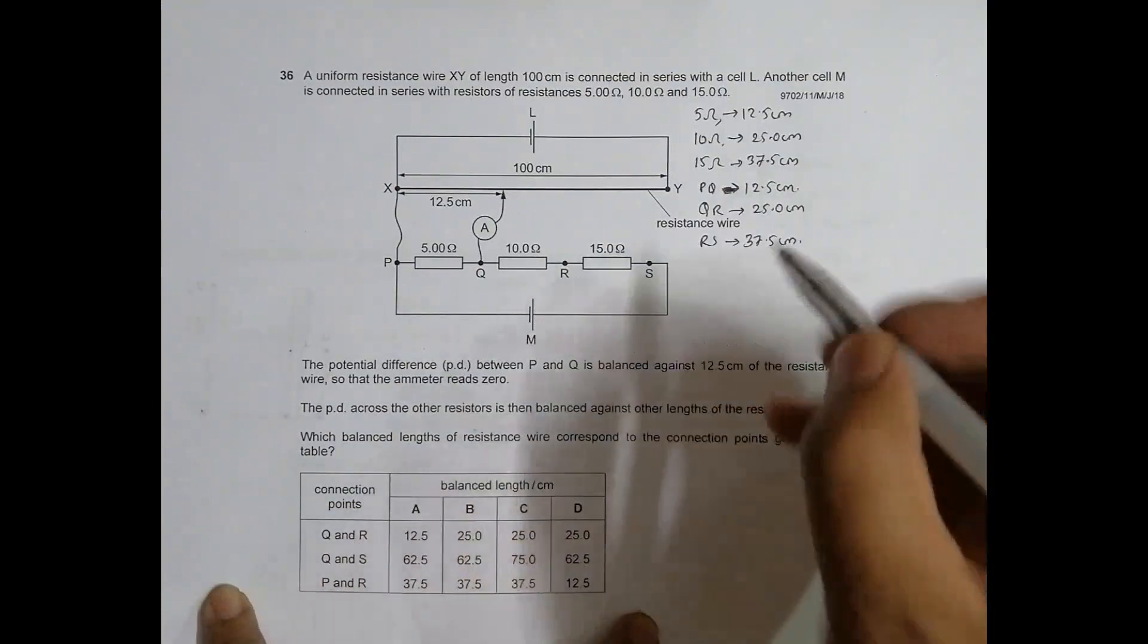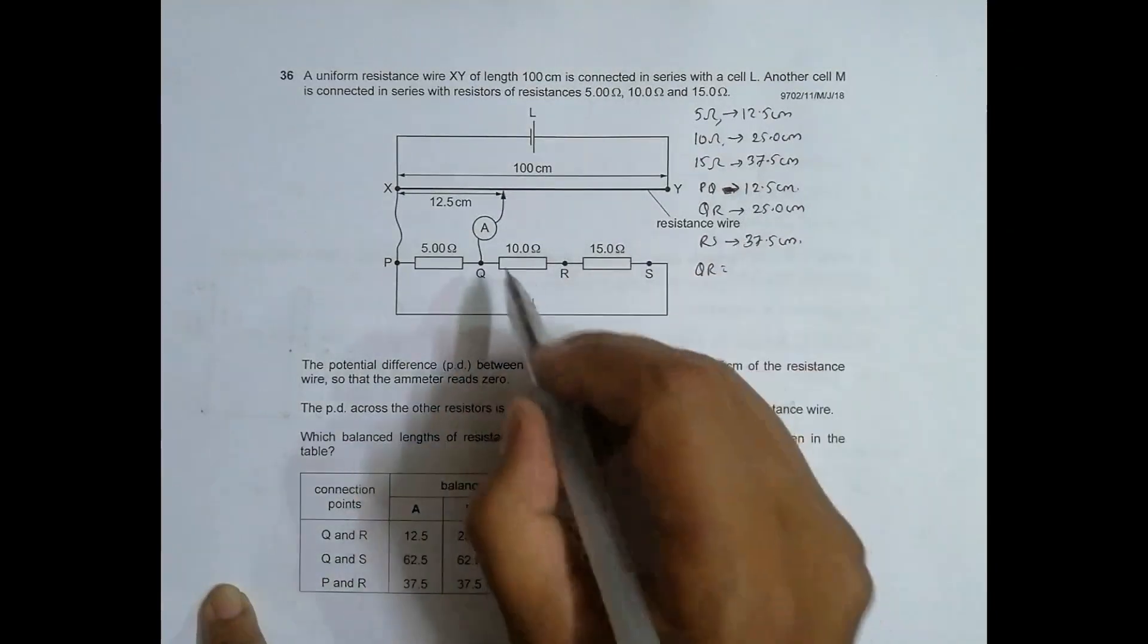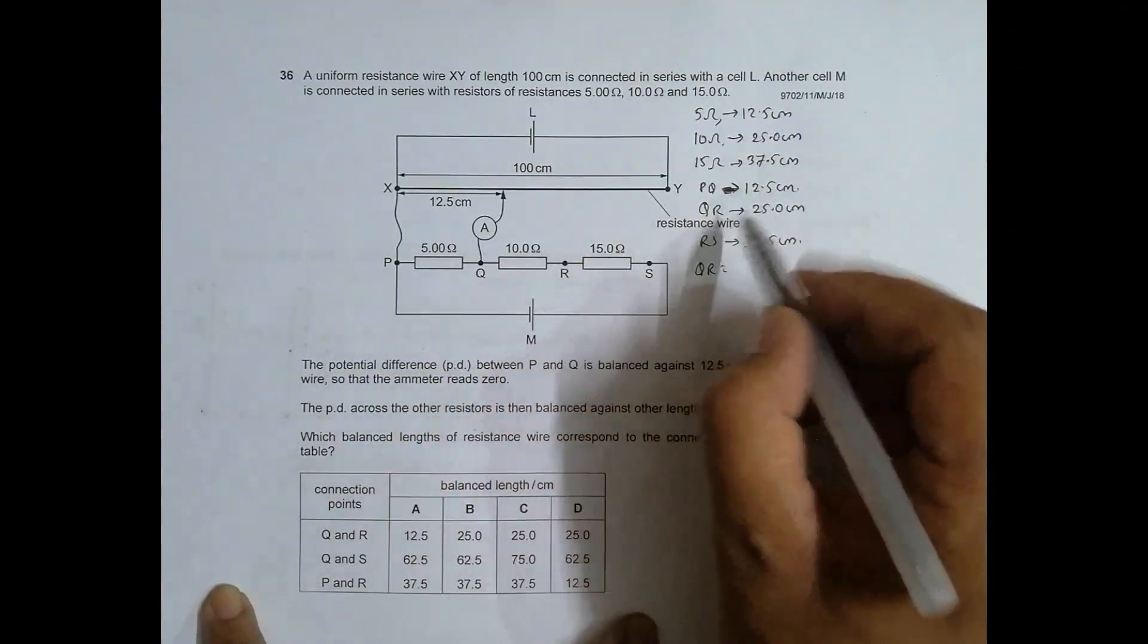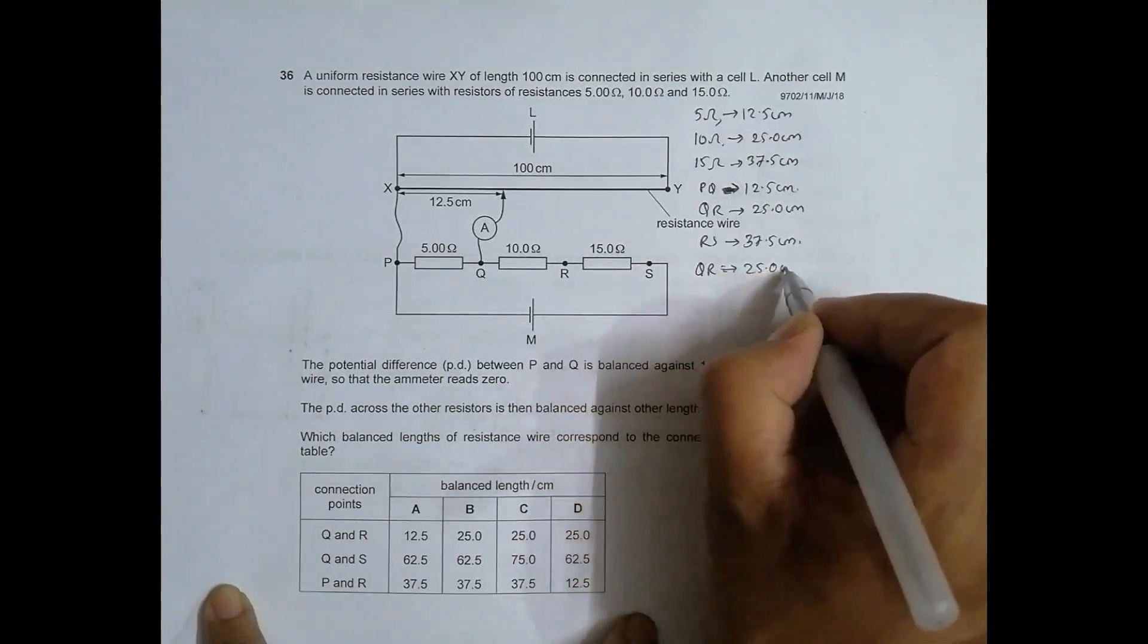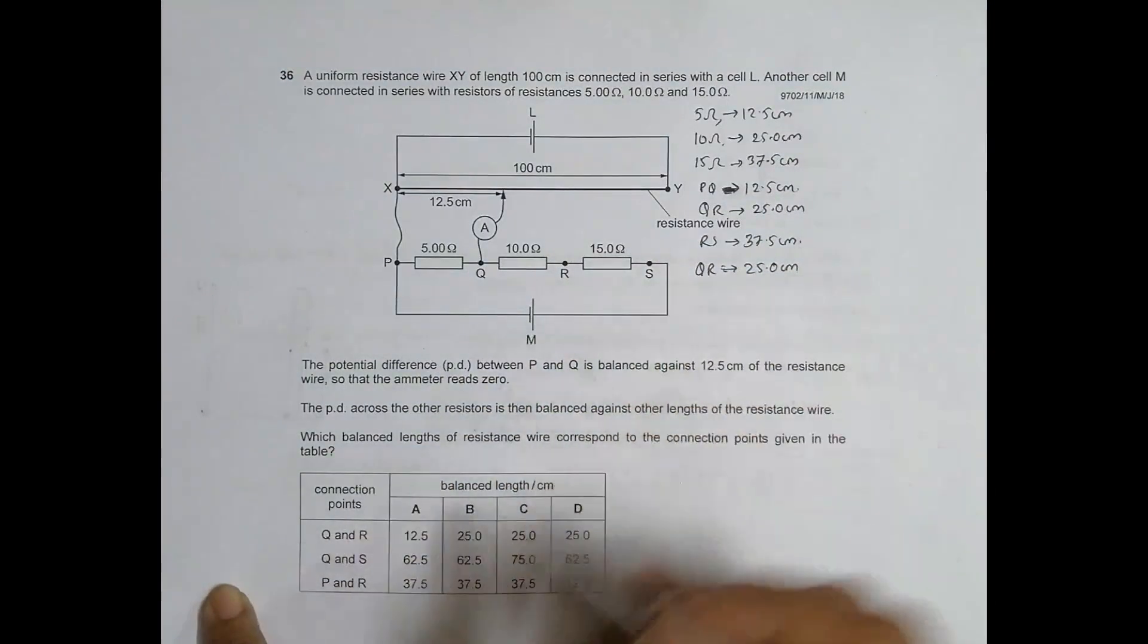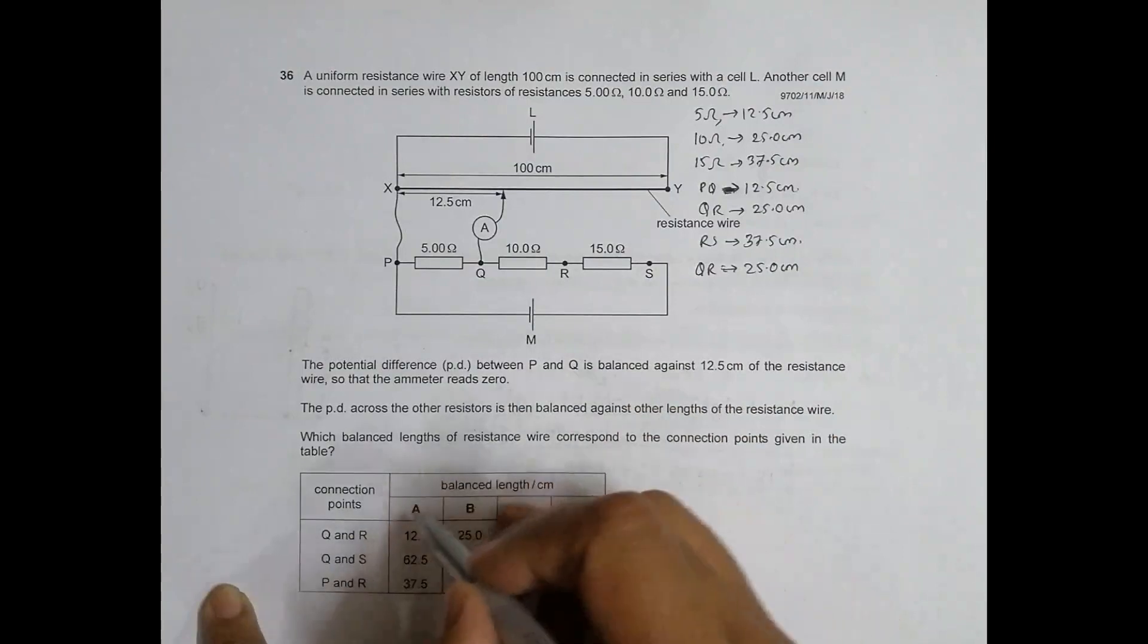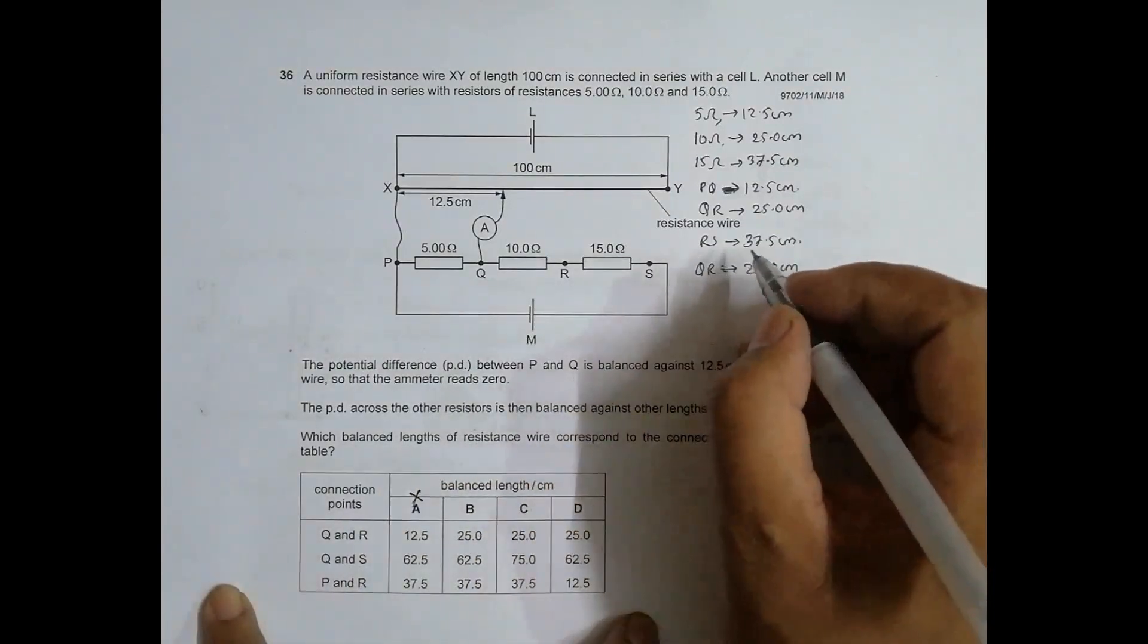Now we require QR. So QR is equal to this much, it is already there, so it is 25.0 centimeters, which means QR corresponds to 25.0. So if you go to the table, B, C, and D qualify but A disqualifies.